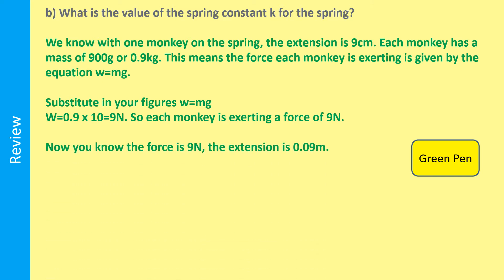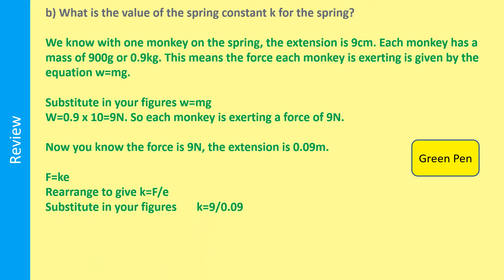Each monkey is exerting W = mg. The mass is 0.9 kilograms and we take g as 10, so each monkey is exerting a force of 9 Newtons. The force is 9 N and the extension is 0.09 metres (9 centimetres). Using our spring equation F = ke, rearrange to give k = F divided by e. Substituting in: k = 9 divided by 0.09, giving a spring constant of 100 Newtons per metre.